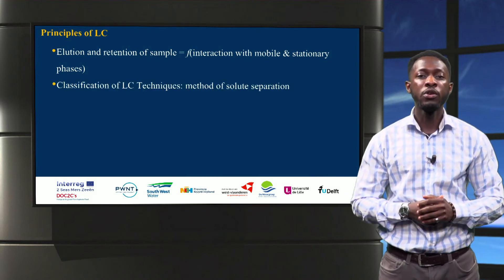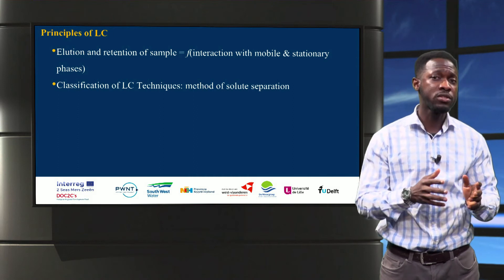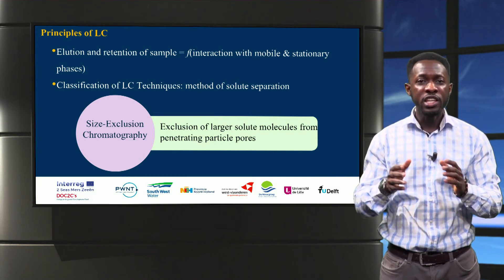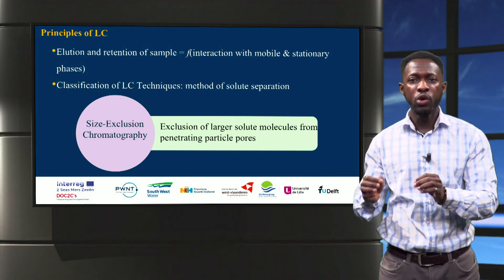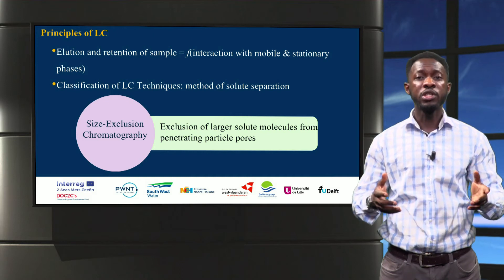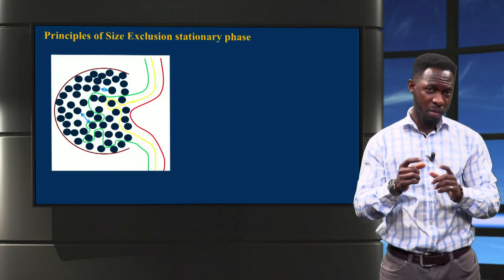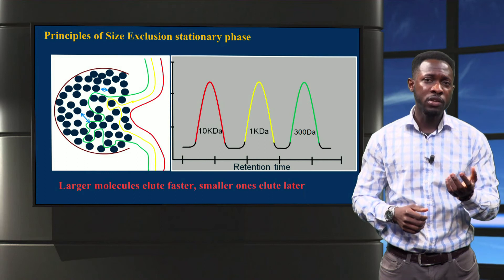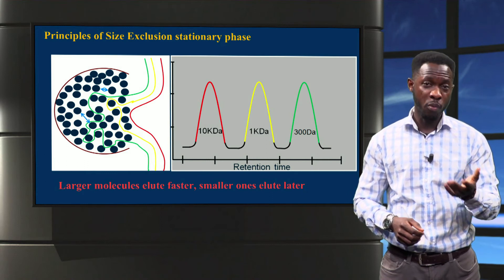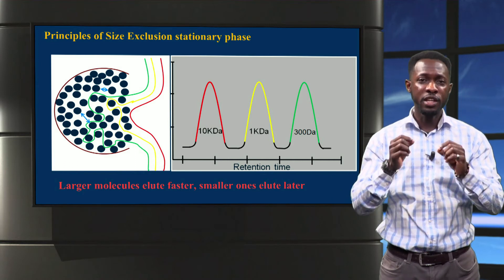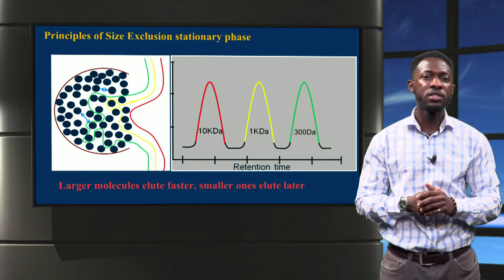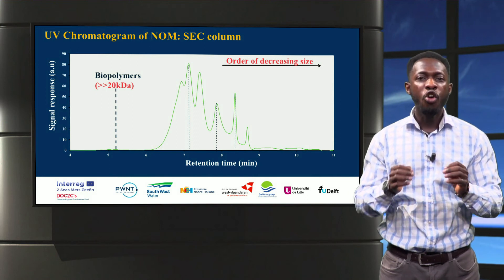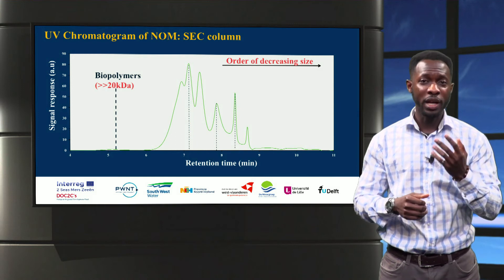There are several types of liquid chromatography depending on the method of solute separation at the stationary phase. Here, we see a current separation method for characterization of NOM that is based on size exclusion, where the larger molecules are prevented from penetrating particle pores. This is made possible because of the different particle pore sizes, as can be seen. Here, we see a sample containing three different particle sizes. Because the larger particle with a size of 10,000 daltons is prevented from entering the pores, it elutes first, followed by the intermediate, and lastly the smallest particle with a size of 300 daltons, because it spends more time in the pores.